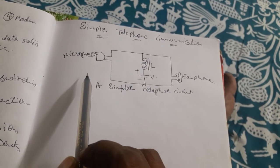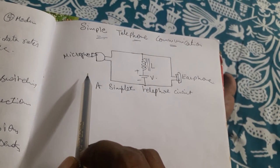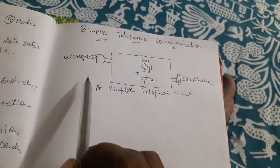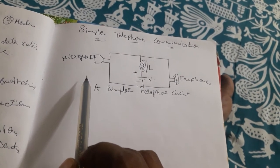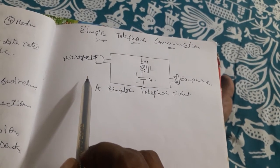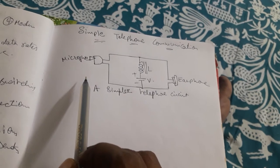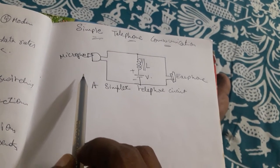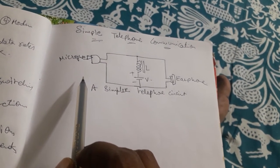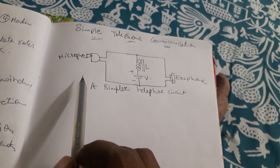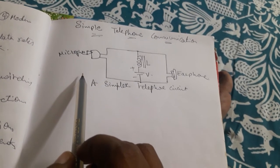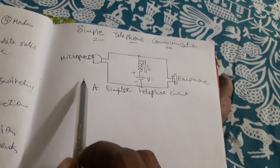When sound waves impinge on the diaphragm, it vibrates, causing the carbon granules to compress or expand, thus changing the resistivity offered by the granules. If a voltage is applied to the microphone, the current in the circuit varies according to the vibrations of the diaphragm. The theory of the carbon microphone indicates that the microphone functions like an amplitude modulator.